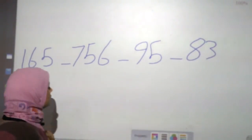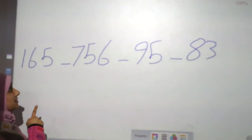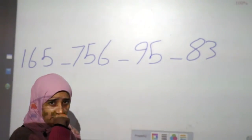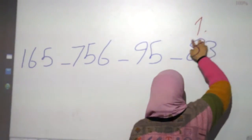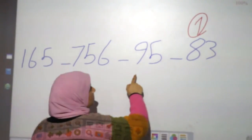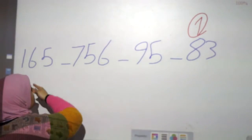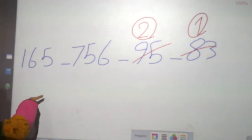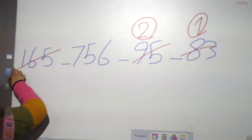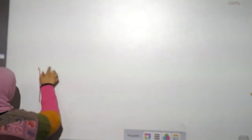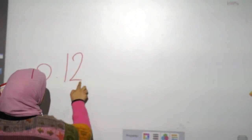Which one is small? Here 165, 756, 95, 83 — where is the small? Yes, 83. Now where is the small: 95 or 165? Here 95 has no hundreds — tens and units only — so 95 is smaller, that would be 2. Then 165 is 3, and 756 is 4 — the big one. Great job!